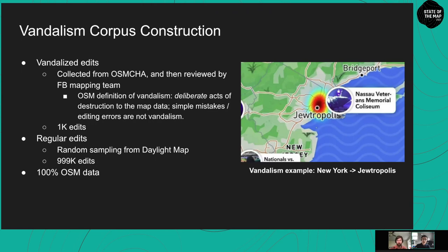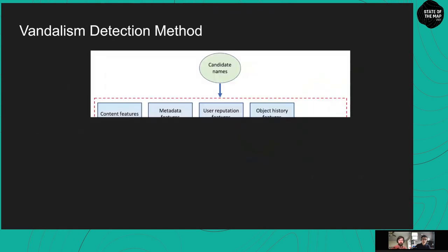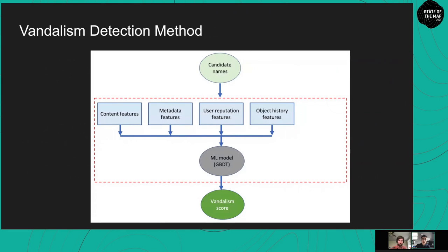Vandalized edits were collected from OSM Chat and then manually reviewed by the Facebook mapping team. The review criteria follows OSM's definition of vandalism: deliberate acts of destruction to the map data, while simple mistakes and editing errors are not vandalism. We collected 1,000 vandalism edits from 261 unique OSM users. Regular edits were randomly sampled from the Daylight Map — a validated vandalism-free version of OSM — giving us 999,000 regular edits for a total of 1 million edits. This corpus was then split into training and test sets.